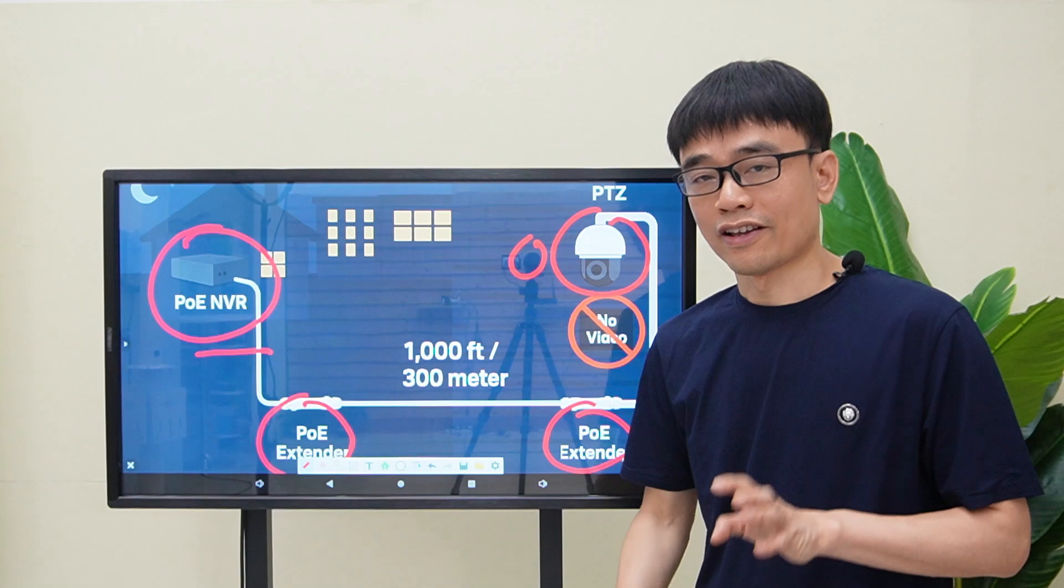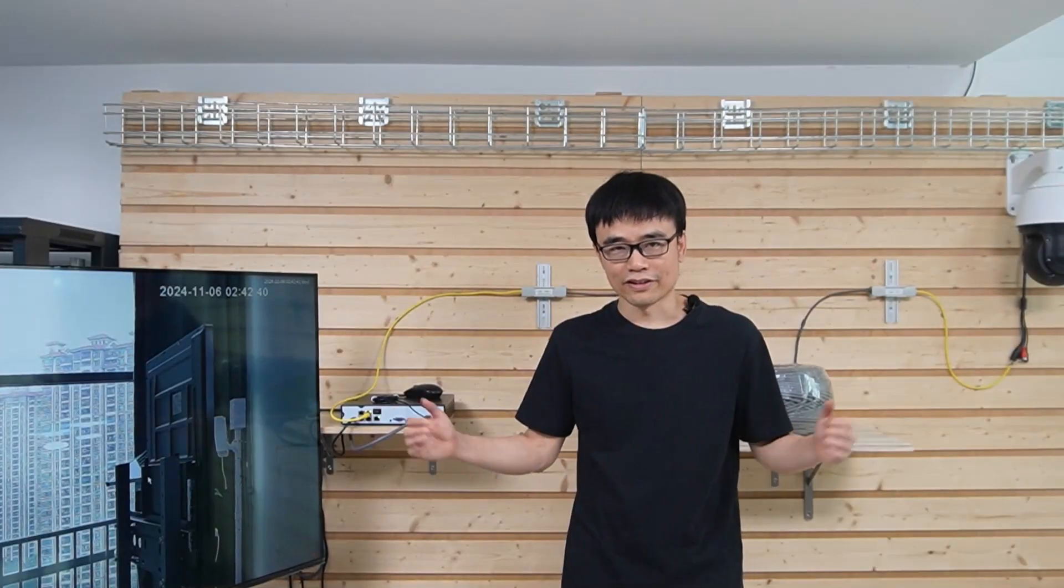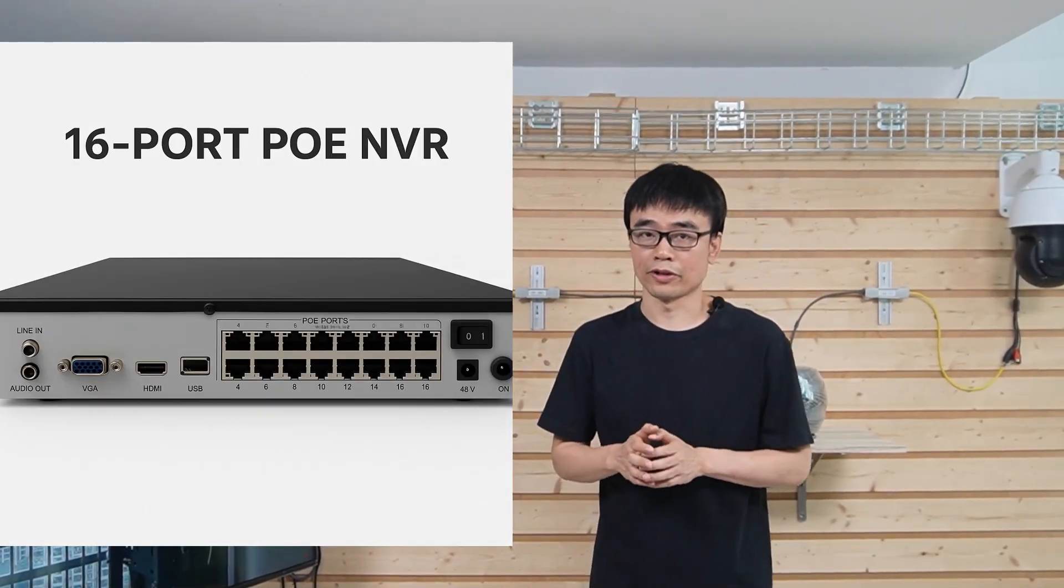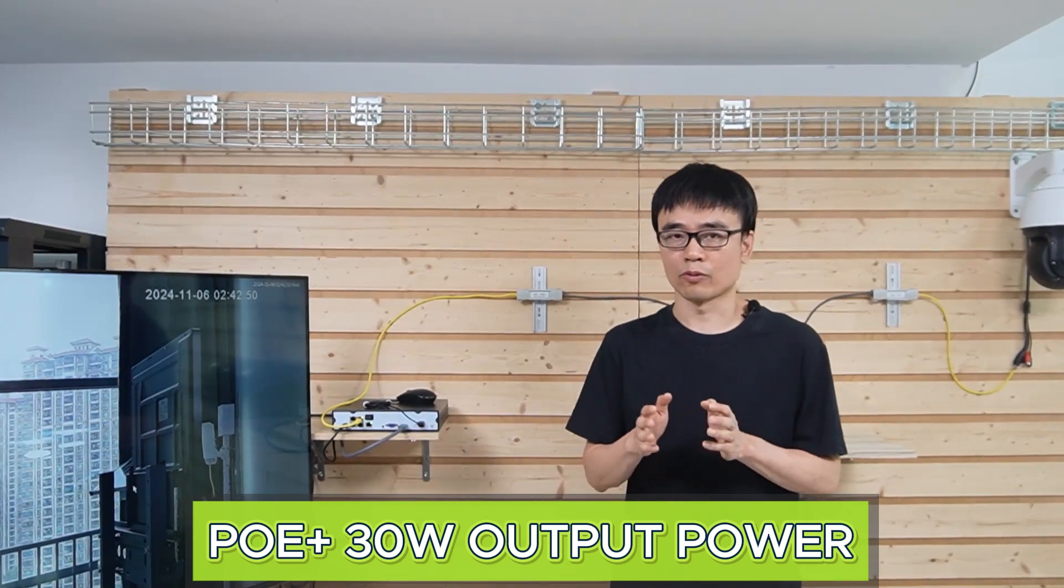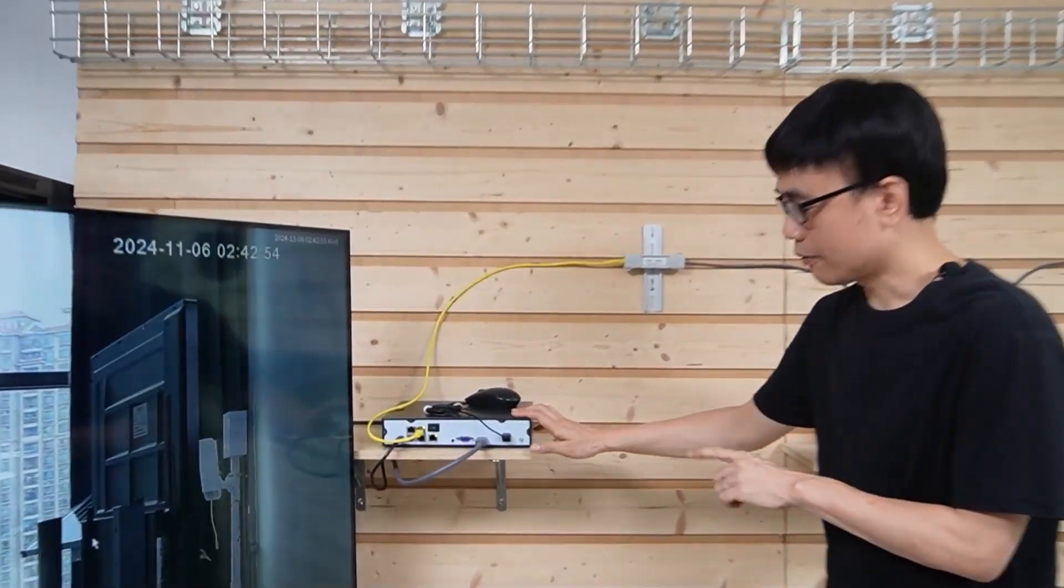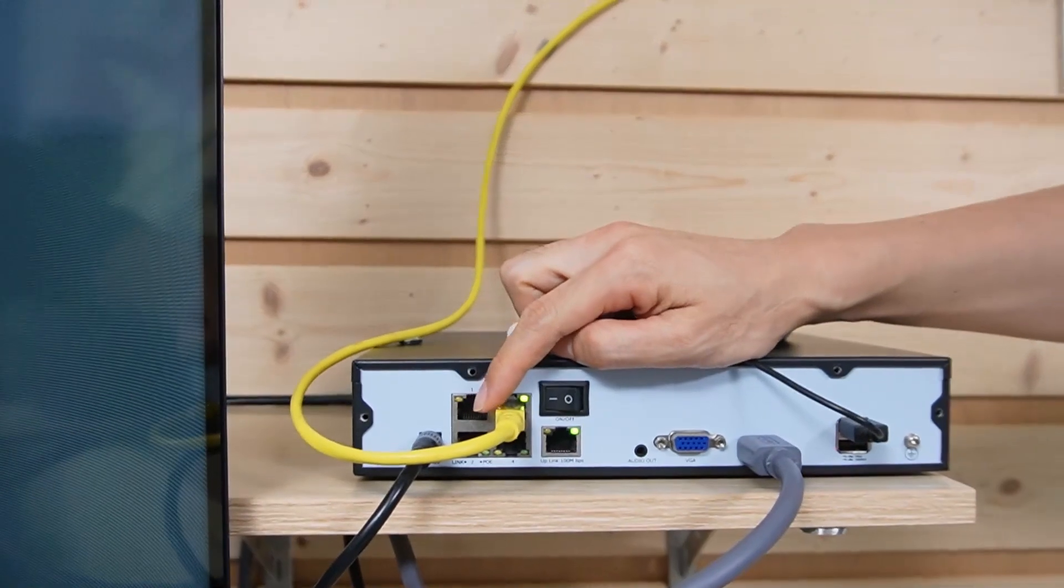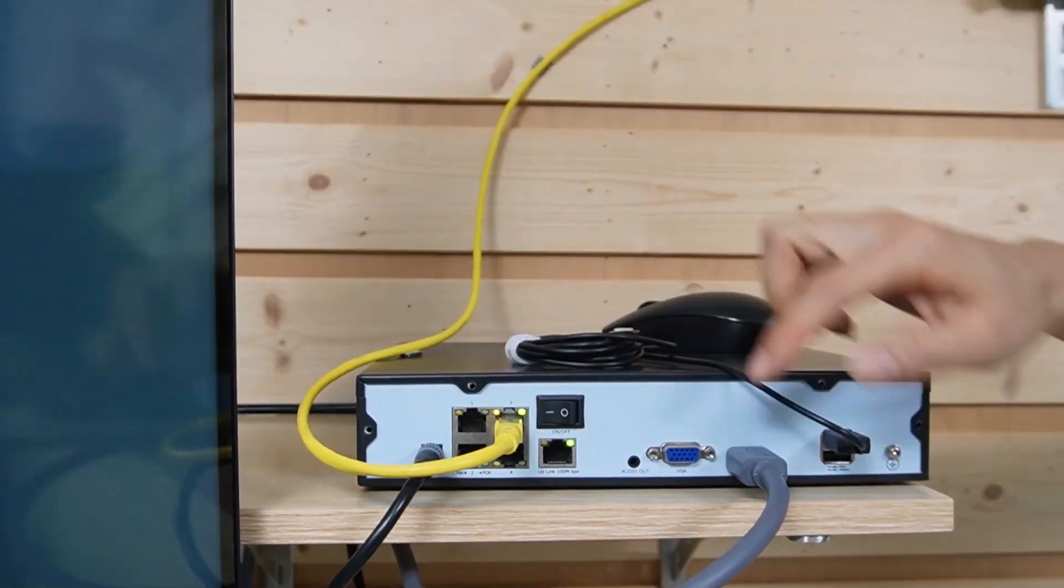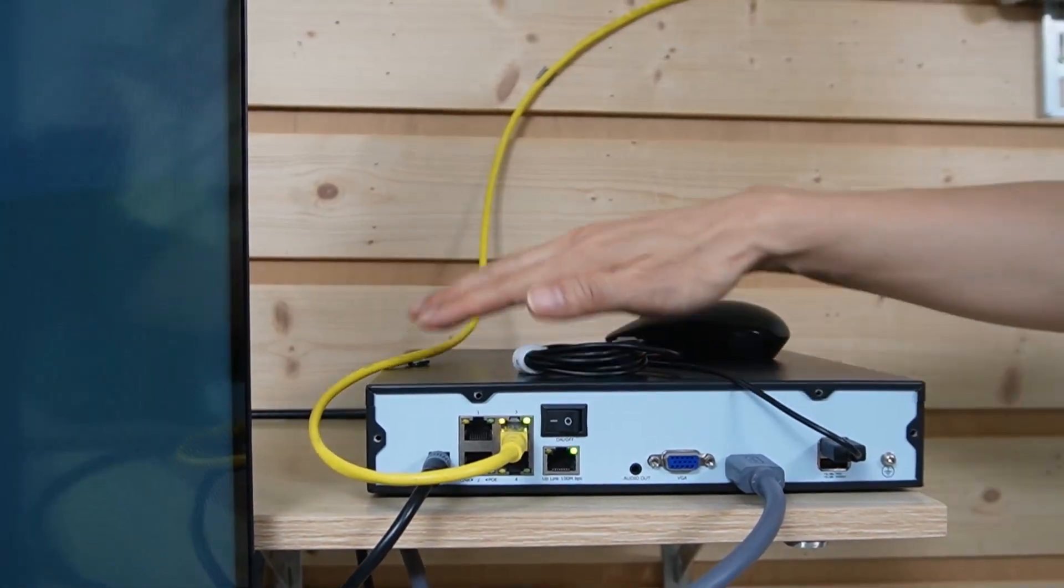Alright, first let's simulate this case and reproduce the issue. This is the setup scenario. The client has a 16 port PoE NVR in his house. The PoE NVR supports PoE+, which can output 30W PoE from a single PoE port. Here we use a 4 port PoE NVR to replace. The PoE NVR is connected to the cable, and we also got the HDMI output to this monitor.